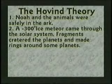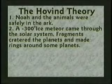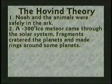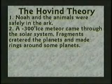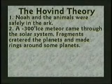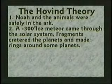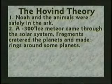I think a 300 below zero Fahrenheit ice meteor came flying through the solar system and began to break apart. Fragments of this meteor hit the planets and caused the craters on the moon and other planets, and a bunch of it came and made the rings around the other planets.